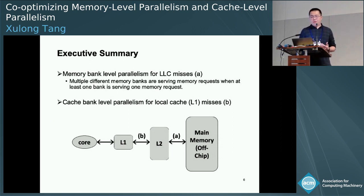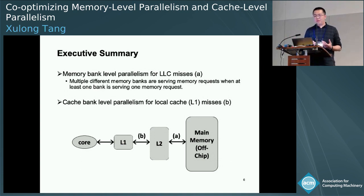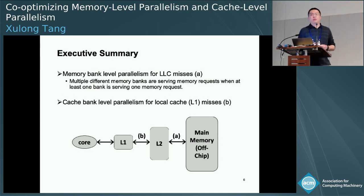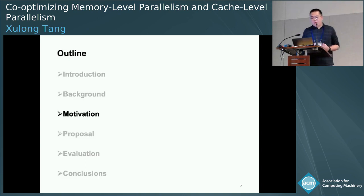When we talk about memory-level parallelism, we mean the parallelism among different memory banks — multiple different banks serve memory requests in parallel when at least one bank has an outstanding memory request. Similarly, for cache bank-level parallelism, data access misses to the local cache are forwarded to different last-level cache banks, and we want as many banks as possible to be accessed in a short period of execution.